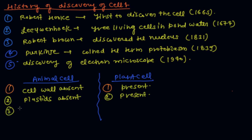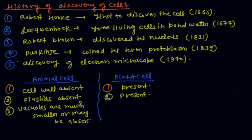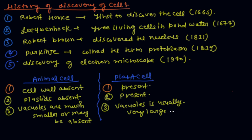In animal cells, vacuoles are much smaller or may be absent. In plant cells, vacuoles are usually very large and single.